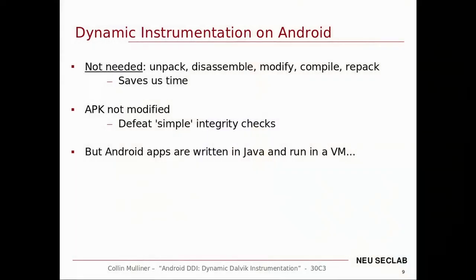What are some of the really basic advantages of doing dynamic instrumentation on Android? One of the main advantages is that you don't need to unpack, disassemble, modify, compile, or repack — so you save a lot of time. Also, you don't need to modify the target APK, so simple integrity checks are still working. Or if you have an application assigned with higher privileges like the platform signature, you cannot repackage it without killing that signature. Android applications are written in Java and run in a virtual machine, so instrumentation is a little bit different than when you instrument native binary code.